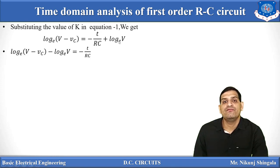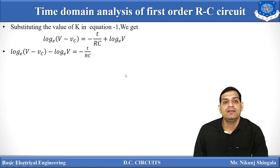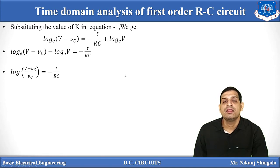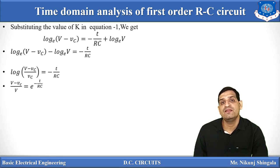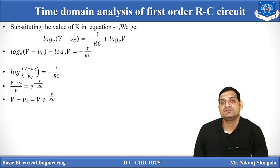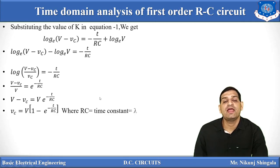Taking the ln(V) term to the left side: ln(V minus VC) minus ln(V) equals minus t/RC. Using the identity ln(x) minus ln(y) equals ln(x/y), we get ln[(V minus VC)/V] equals minus t/RC. Taking antilog on both sides: (V minus VC)/V equals e raised to minus t/RC. So V minus VC equals V·e raised to minus t/RC, giving us the charging voltage equation: VC equals V times (1 minus e raised to minus t/RC).